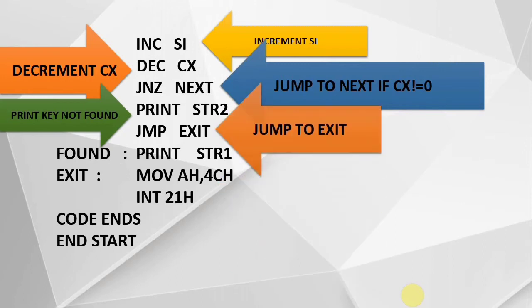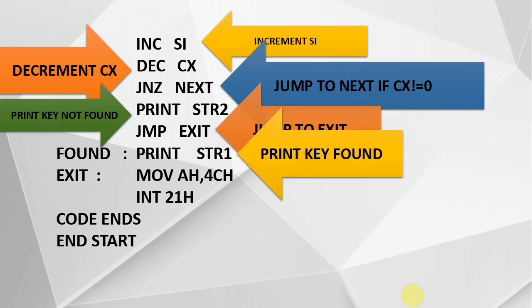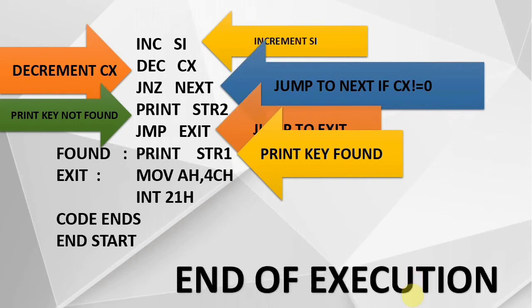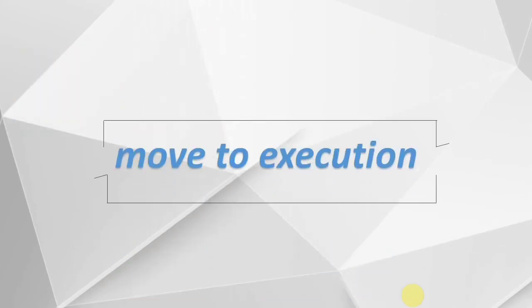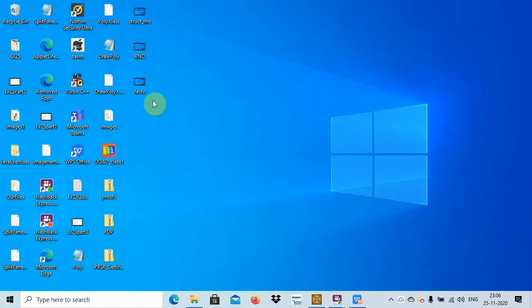After printing 'key not found', JMP exit jumps to the exit label. At exit, MOV AH, 4CH followed by interrupt 21H closes the execution. At the 'found' label, the print macro prints STR1 ('key found'), and similarly MOV AH, 4CH with interrupt 21H ends execution. The END START directive closes the program.